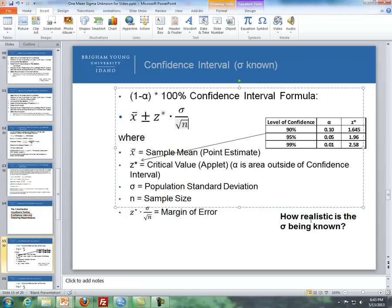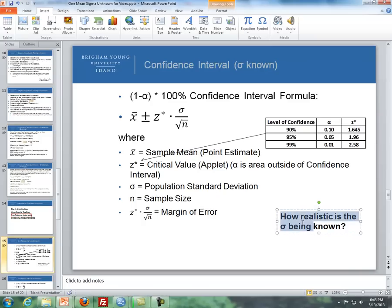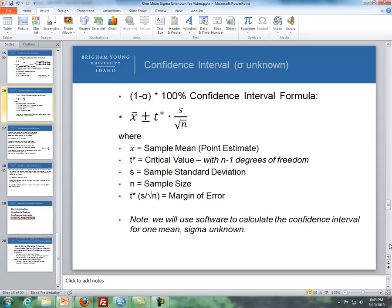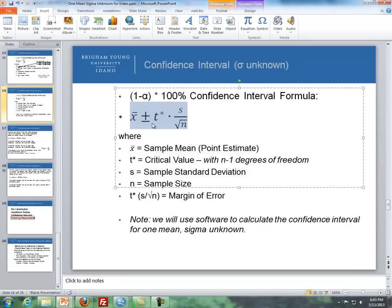As I mentioned in the previous video, how realistic is sigma, or the population standard deviation, how realistic is it being known? Well, it's not very realistic, so we use a confidence interval for the t-distribution. And here's a similar looking formula, where we have x-bar plus or minus a margin of error, but we get a critical value from a t-distribution, and then we get our standard deviation from our sample. That's the two differences.